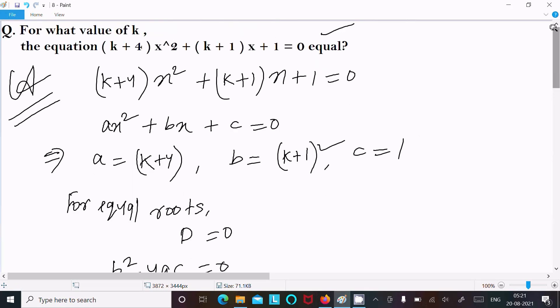So the values of k are -3 and 5. This is the answer for k. This is the way we can find the value of k for this equation.